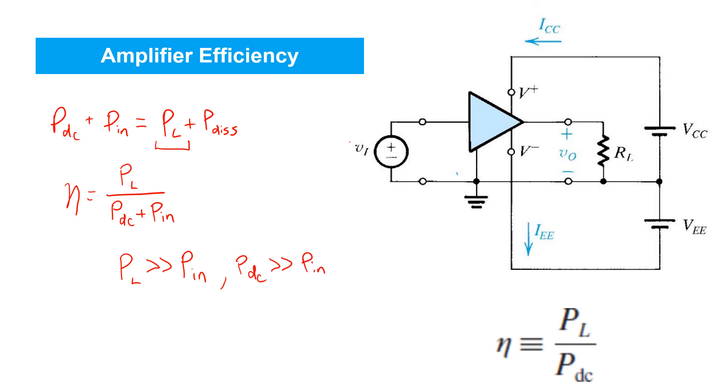In such cases, in the definition of efficiency, we can make a very accurate approximation and neglect the term PIN in the denominator. And that gives us this final expression for efficiency shown here, which is PL, load power, divided by the input power from the DC power supplies.